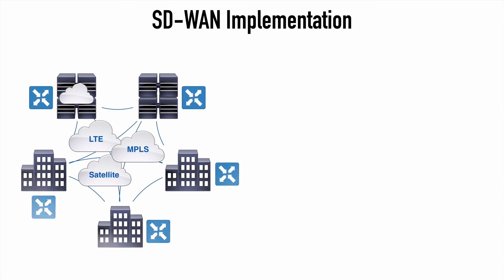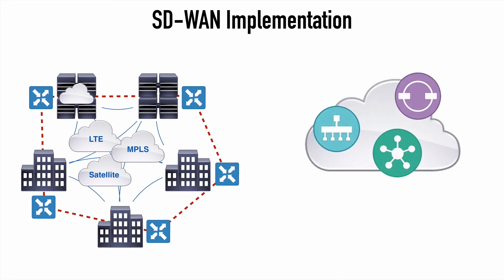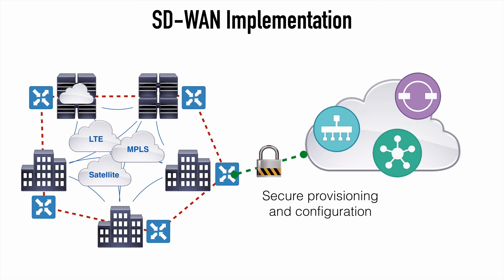At each of these locations, we would have a WAN edge router, a Cisco V-edge device, and these routers form IPsec tunnels with each other in order to create the SD-WAN overlay network. This is going to make up the data plane that we discussed earlier. Also recall that all of the control elements we discussed — Cisco's VManage, VBond, and VSmart — secure control channels would be established between each of these elements and each one of the WAN edge routers, and that would be used for provisioning and for configuration of the devices.